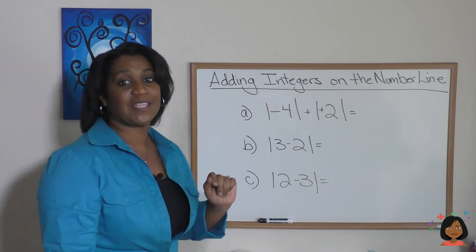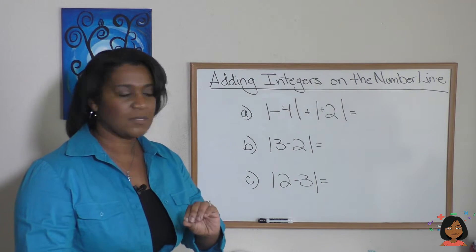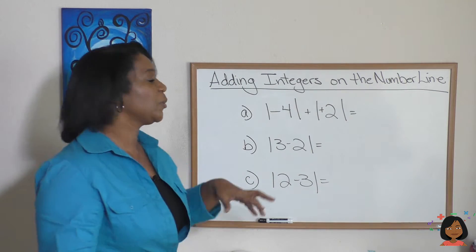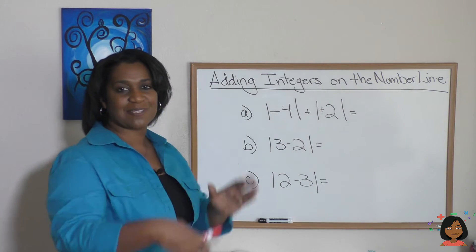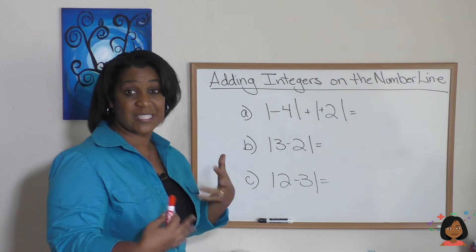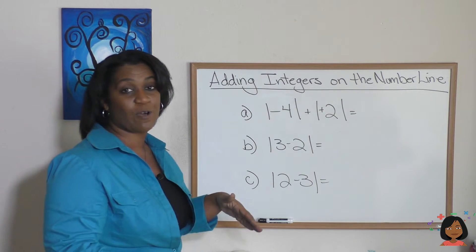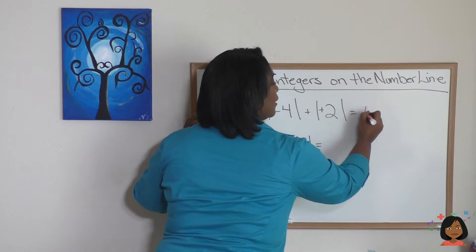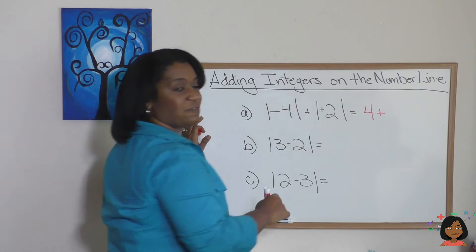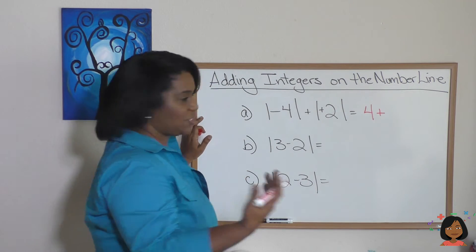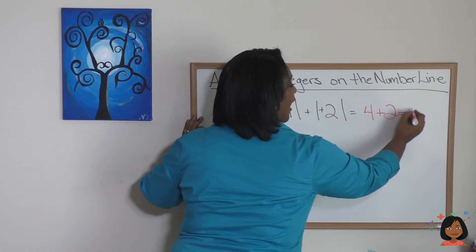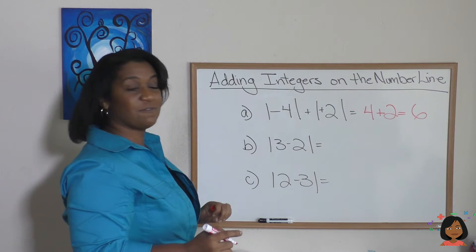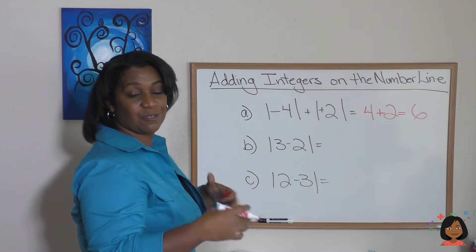Here we have the absolute value of negative four plus the absolute value of positive two. Starting with negative four: absolute value strips it of its sign, so the absolute value of negative four is just four. Plus the absolute value of positive two, which is two. Now we add: four plus two is six.